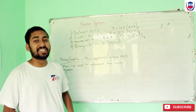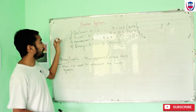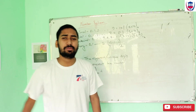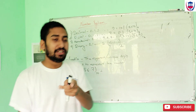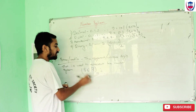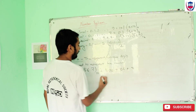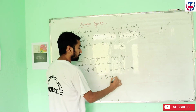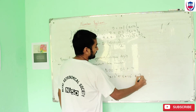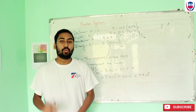So there are 4 different types of number systems, and we need to learn about the base and representation. The number 567 with base 10 is decimal. We can expand it: 5 into 10 to the power of 2, plus 6 into 10 to the power of 1, plus 7 into 10 to the power of 0. That gives us 500 plus 60 plus 7, which equals 567.